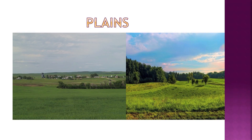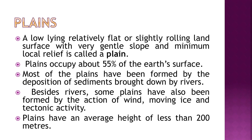Now let's move on to the third type of landforms — the plains. Plains are a low-lying, relatively flat or slightly rolling land surface with very gentle slope and minimum local relief. They occupy 55 percent of earth's surface. Most plains have been formed by deposition of sediments brought down by rivers. Some plains have also been formed by the action of wind, moving ice and tectonic activity. Plains have an average height of less than 200 meters.